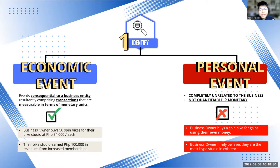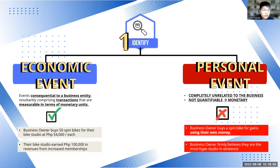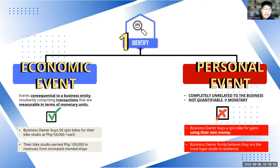Another example: the bike studio earned 100,000 in revenues from increased membership. That's an economic event — it's consequential to the business and has a monetary unit of 100,000. In contrast, the business owner claiming they are the most hype studio in existence fails the second criterion: it's not quantifiable in monetary units. You can't assign a dollar amount to 'most hype,' so it's a subjective event, not an economic event, and we don't record it.